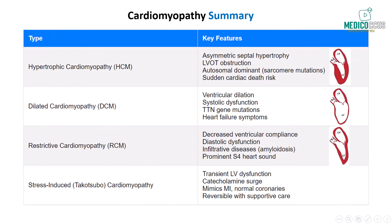In summary, hypertrophic cardiomyopathy is characterized by asymmetric septal hypertrophy, leading to left ventricular outflow tract obstruction. This condition is often due to autosomal dominant mutations in sarcomere proteins, such as the beta-myosin heavy chain. Clinically, it's important to recognize the risk of sudden cardiac death, particularly in young athletes, as this is a high-yield topic frequently tested by the NBME.